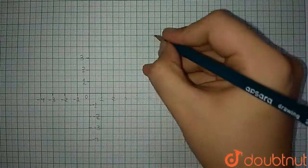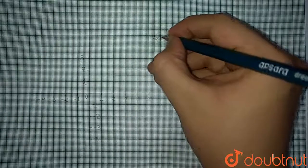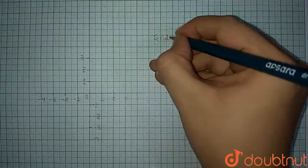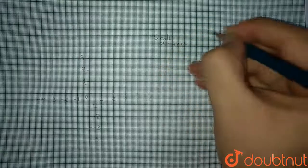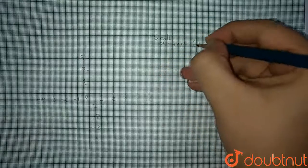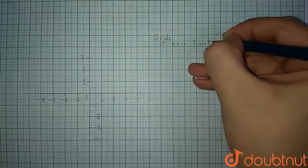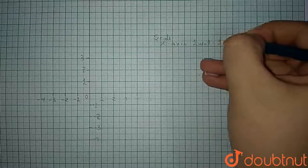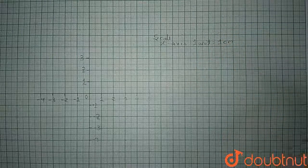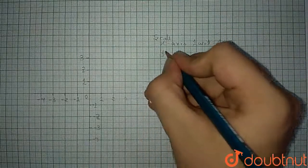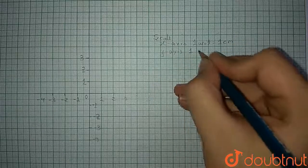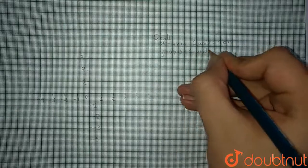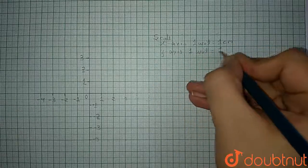The very first step is to mark the scale of the graph. The scale is: on the x-axis, one unit is equal to one centimeter, and on the y-axis also, one unit is equal to one centimeter.